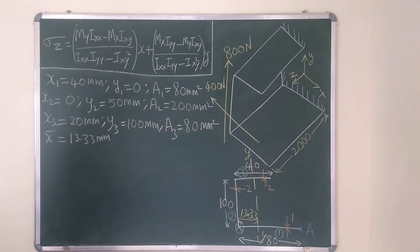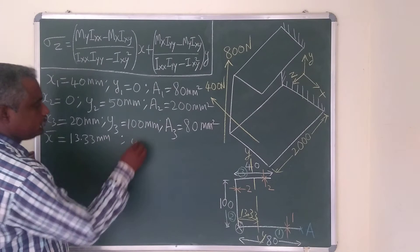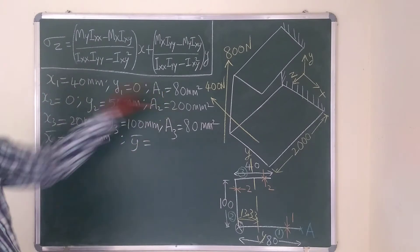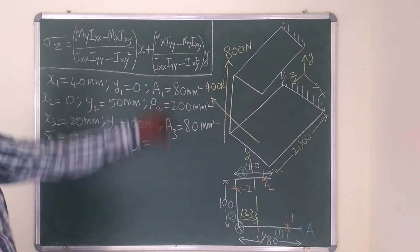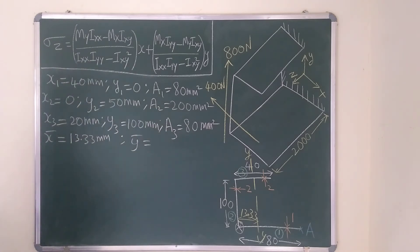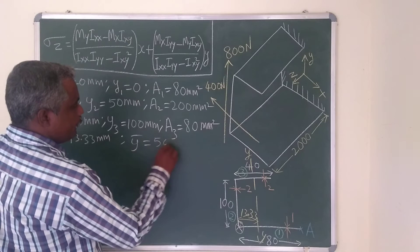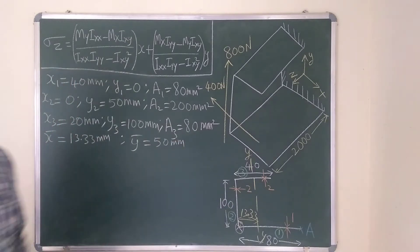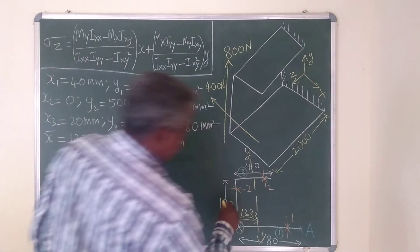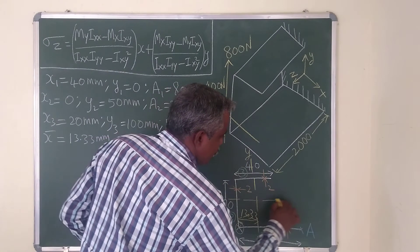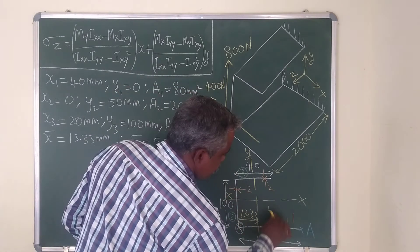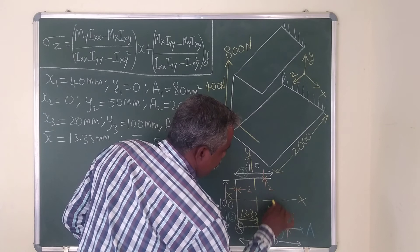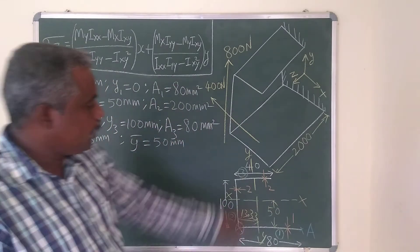Similarly, Y-bar = (A1·Y1 + A2·Y2 + A3·Y3) / (A1 + A2 + A3). After calculating, Y-bar = 50 mm. So Y-bar locates the position of the centroidal XX axis, which is at a distance of 50 mm above the reference point. All dimensions are in millimetres.